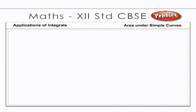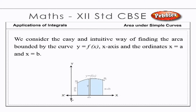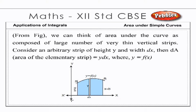Area under simple curves. We consider the easy and intuitive way of finding the area bounded by the curve y = f(x), the x-axis, and the ordinates x = a and x = b. From the figure, we can think of the area under the curve as composed of a large number of very thin vertical stripes. Consider an arbitrary strip of height y and width dx, then dA, the area of the elementary strip, is equal to y dx, where y = f(x).